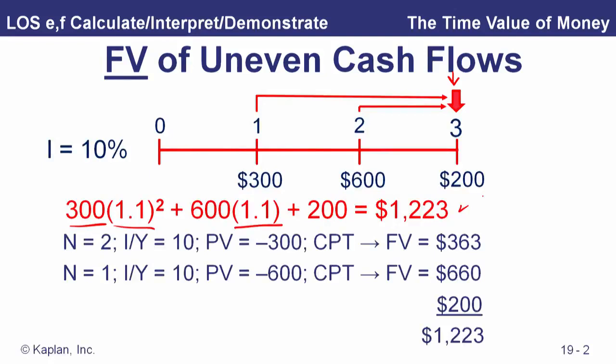There's each piece on the calculator. Notice the last deposit is a time-three value, so we don't have to compound that at all. Now with those same uneven cash flows, what's the present value — or put another way, how much would I have to put in the account today in order to make those three withdrawals and just exhaust the account?